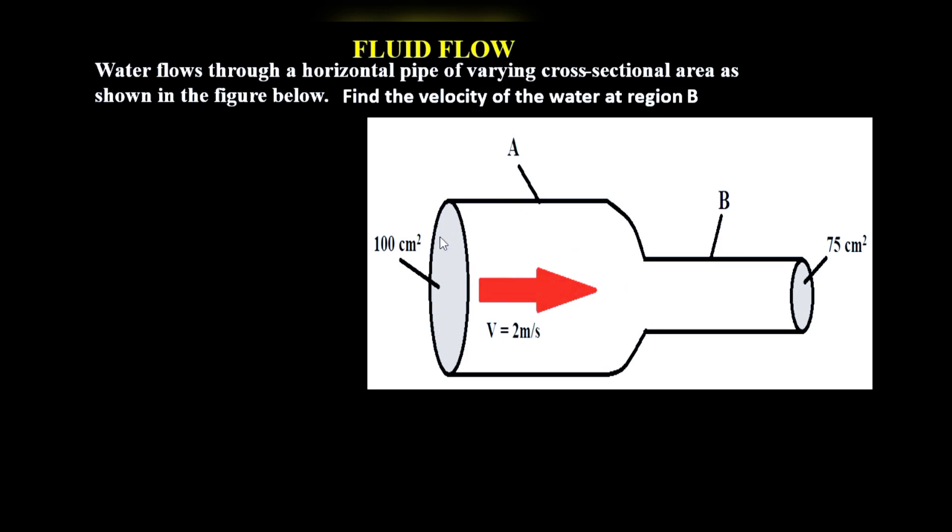For region A, it has a wider cross-section which is 100 square centimeters, and region B has a narrower cross-section which is 75 square centimeters. In region A, water is flowing at a velocity of 2 meters per second, and we need to find the velocity of water in region B.